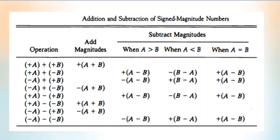Now we are going to explain how to get the expressions in each column of this table. Do you remember what is the strategy of addition when two numbers have the same sign or different signs? When two numbers have the same sign, we add the two numbers and put that sign in the result. Whereas when we add two numbers with different signs, we subtract the smaller one from the bigger one and put the sign of the bigger number in the answer.